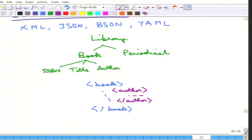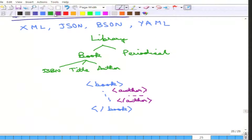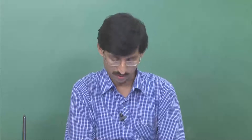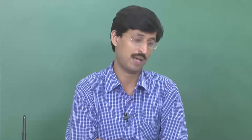Document databases are very useful in scenarios where data is inserted once and read many times. For example, a library acquires a book once and many people search or read it. This scales up much better.